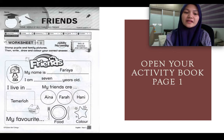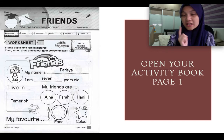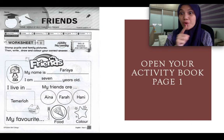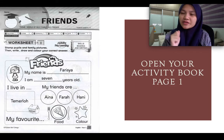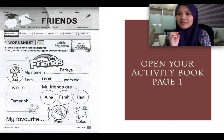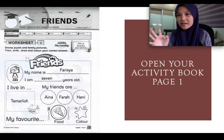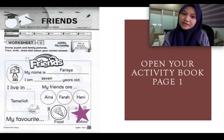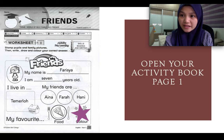Then tell me what is your favorite food. For example, Farisha's favorite food is pizza. You need to draw the pizza, or any food that you like — for example, fried rice or spaghetti. Then, what is your favorite color? For example, purple — you have to color the star there. That is our first activity.